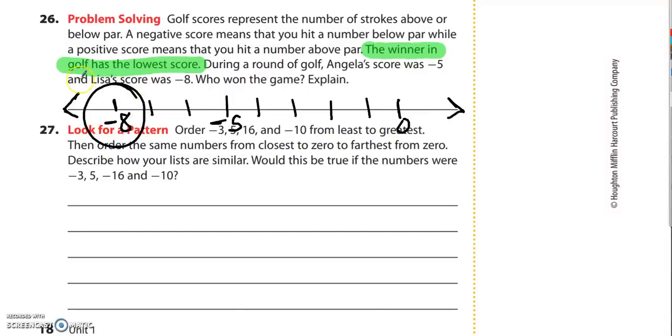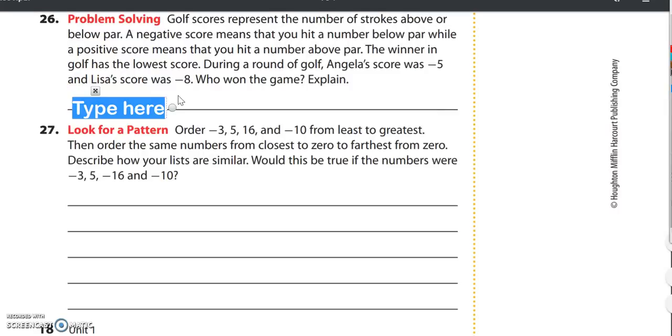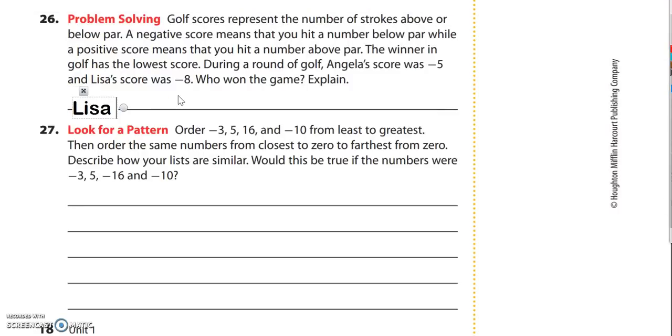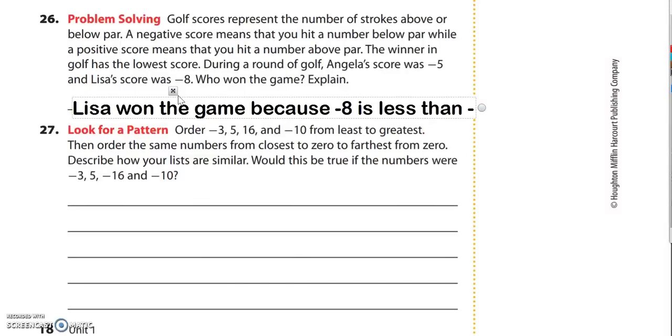The lower score would be the one that's farthest to the left. The one that's farthest to the left would be negative 8. So the person that got negative 8 is Lisa. Lisa won the game because negative 8 is less than negative 5.